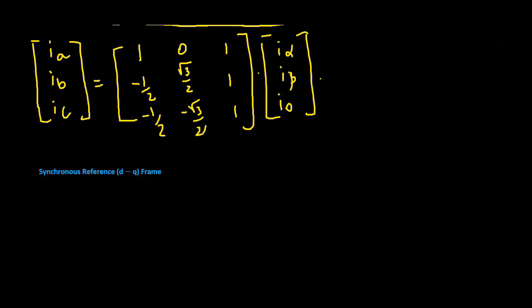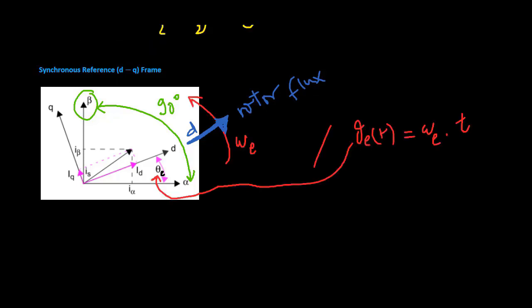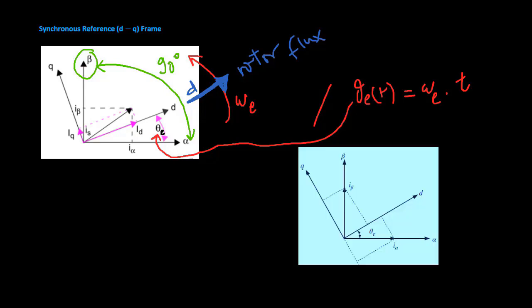Another reference frame is the DQ reference frame, where the direct axis D is always aligned with the rotating flux produced by the permanent magnets of the rotor, and the Q axis is in quadrature. Because the rotor runs at the same speed as the supplying frequency at steady state, it is also called the synchronous frame for PMSM. To change the reference frame to the DQ reference frame, as shown in this figure, it is equivalent to rotating the space vector in the alpha-beta reference frame clockwise by theta E.